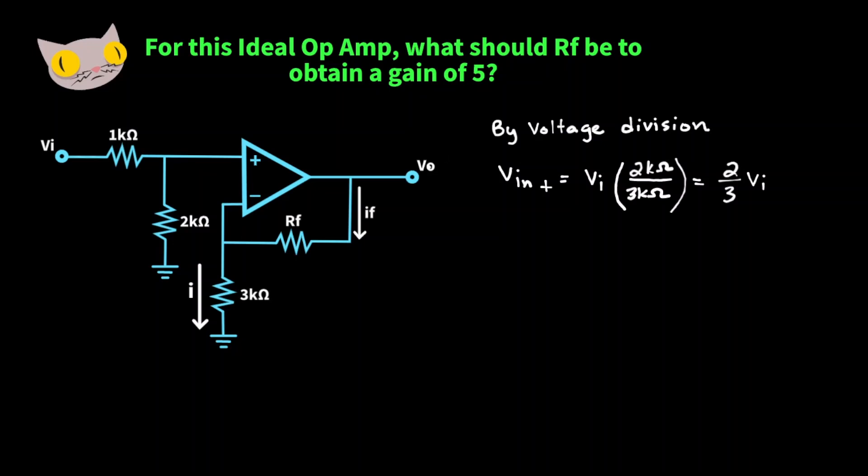And because there is a virtual short circuit, VIN on the positive side is equal to VN on the negative side.